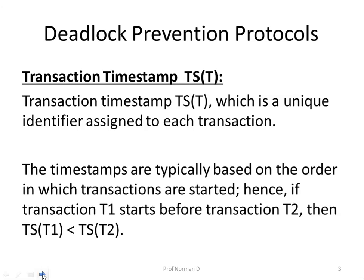We will now see some new techniques to prevent deadlock. The first technique is the transaction timestamp, written as TS(T), where T indicates the transaction and TS indicates its timestamp. This timestamp is a unique identifier assigned to each transaction. The timestamps are typically based on the order in which transactions are started, so if T1 starts before T2, then TS(T1) will be less than TS(T2).